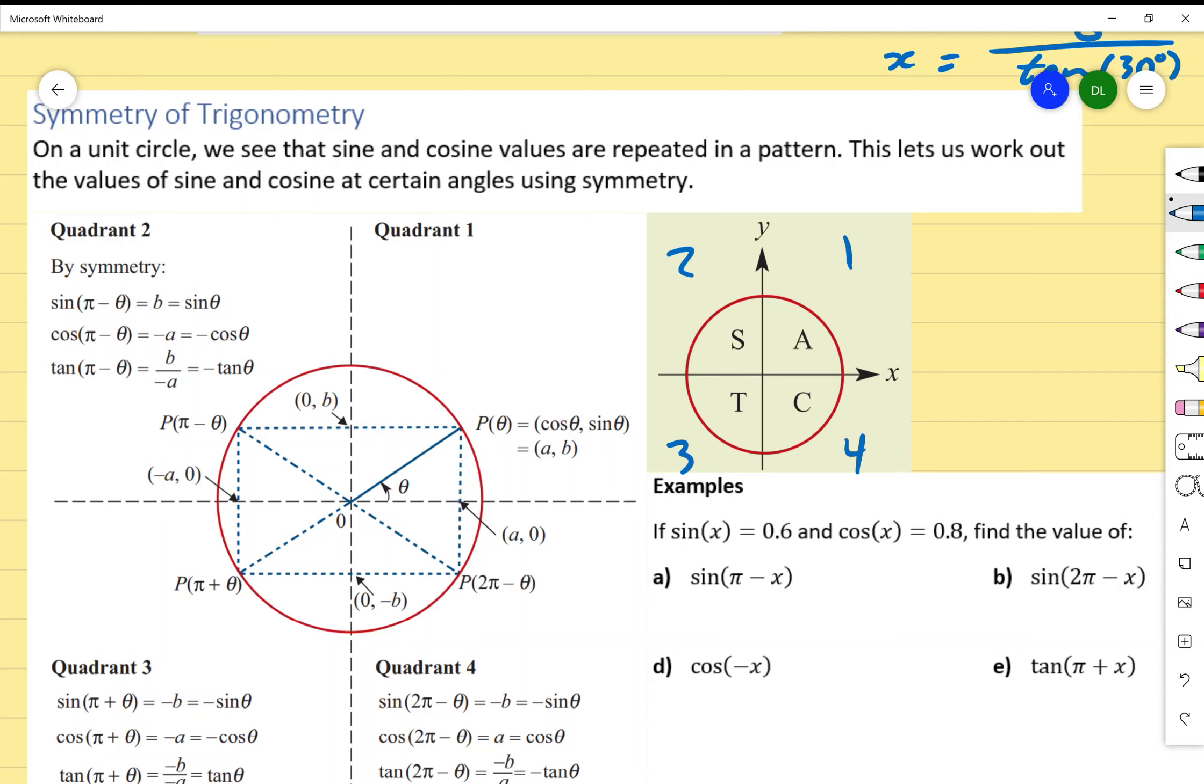But on that note, we have ASTC. Basically, all that means is that in each of these quadrants, besides the first quadrant, only one function—sine, cosine, or tan—is going to be positive.